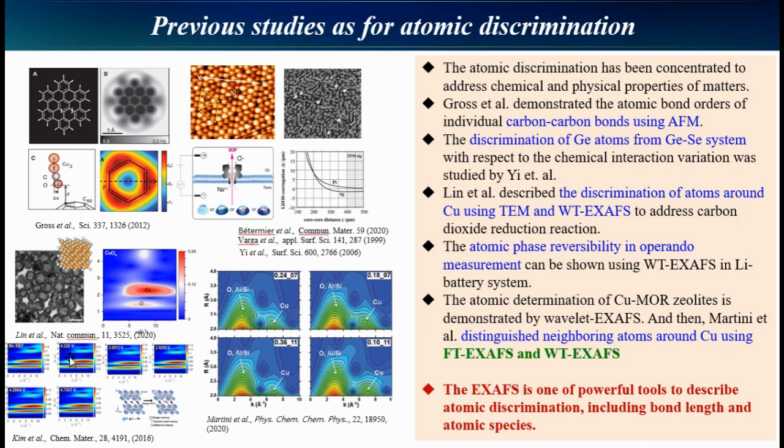As other tools, the Wavelet Transform EXAFS can show us the discriminated atoms in K-space and R-space simultaneously. It is one of the powerful tools to describe atomic discrimination, including bond length and atomic species.